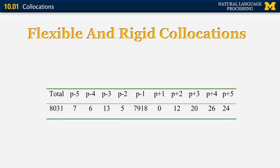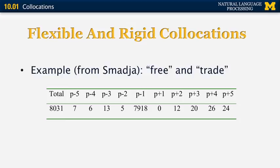Another thing to consider is whether a collocation is flexible or rigid. In an example from a paper by Frank Smadja, p+1 means the second word appears exactly after the first, p+2 means two words later, and p-1 means it appears right before. In one case, a pair of words appears together 8,031 times, and in 7,900 of those cases they appear right next to each other — making it a fairly rigid collocation. The pair examined here is free and trade.